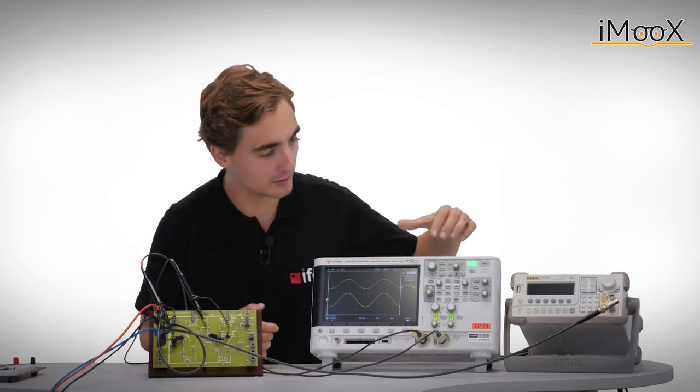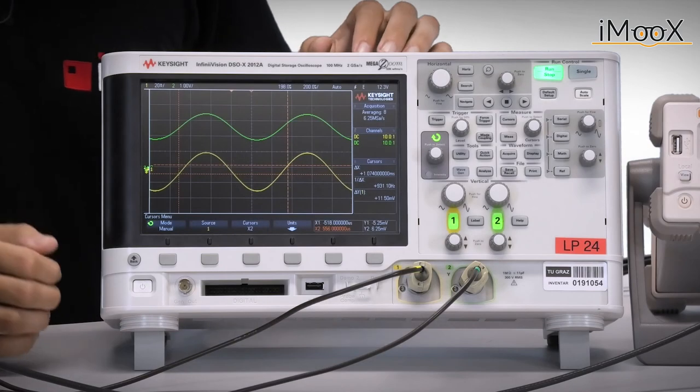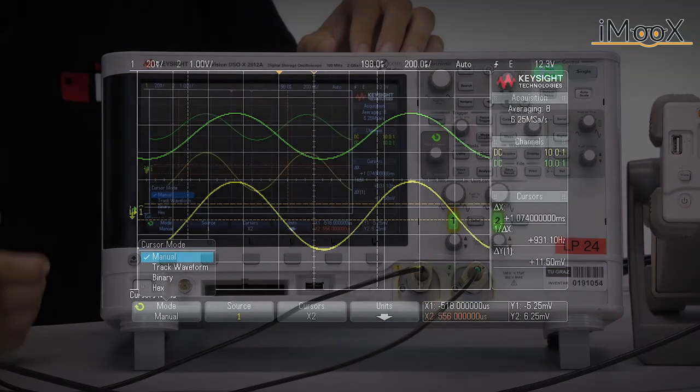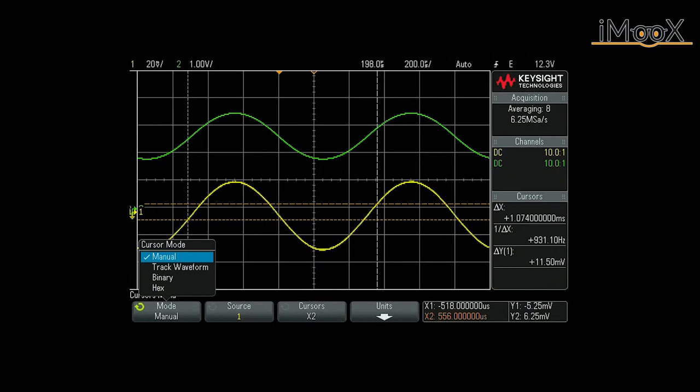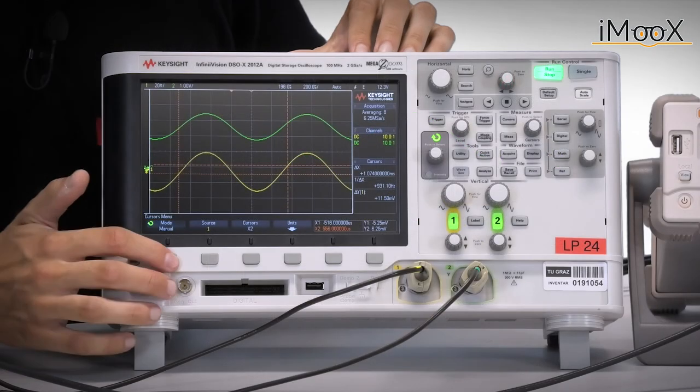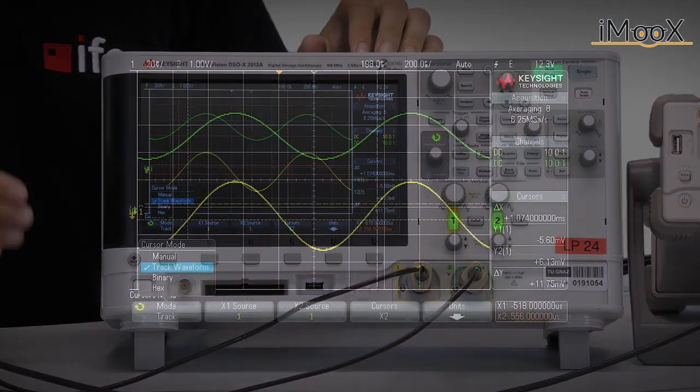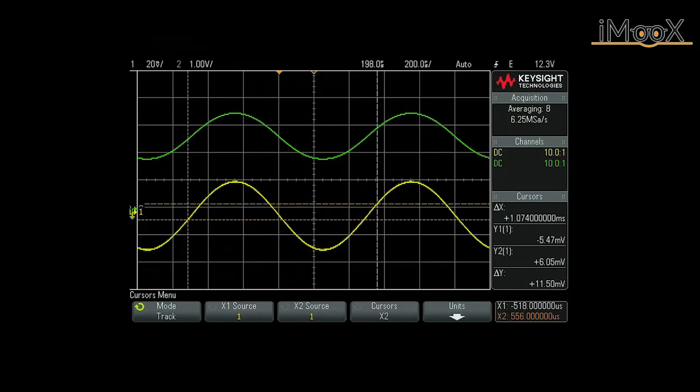A manual way of measuring characteristics of a waveform is also available when using so-called Cursors. Again, there are different modes available in the Cursor menu, from a fully manual cursor mode where X and Y-axis have to be defined separately, to a Tracking mode where only the X-axis is defined and the Y-axis is obtained from the signal.